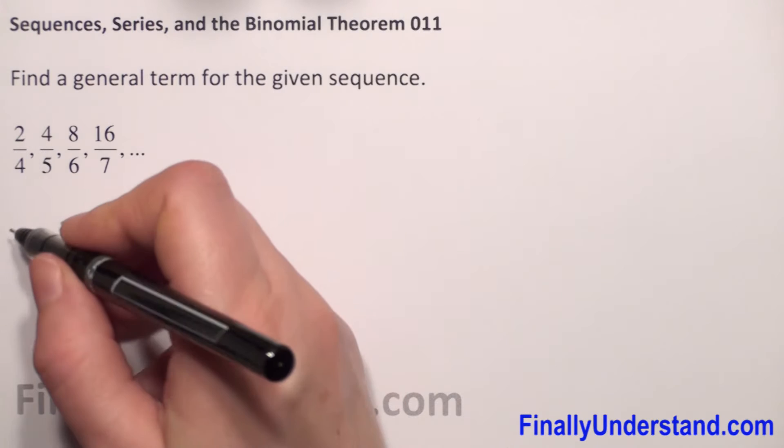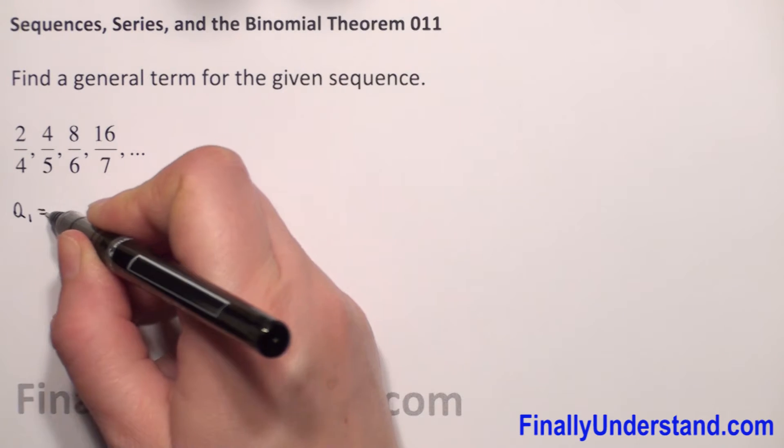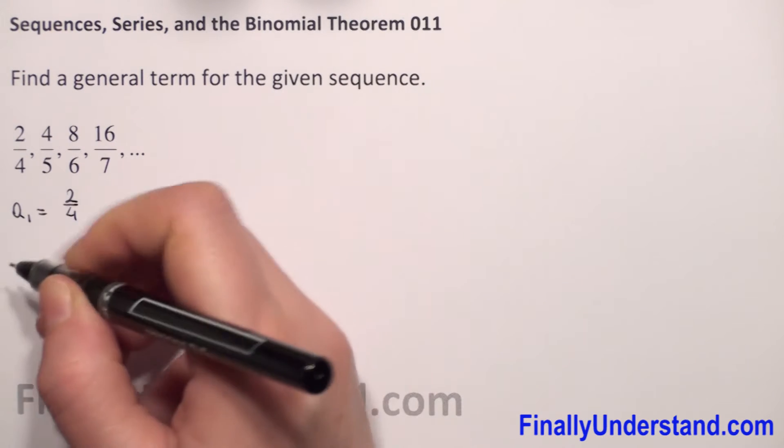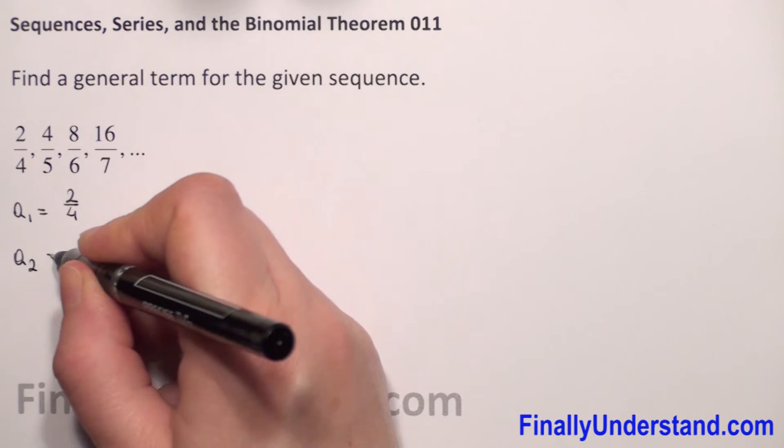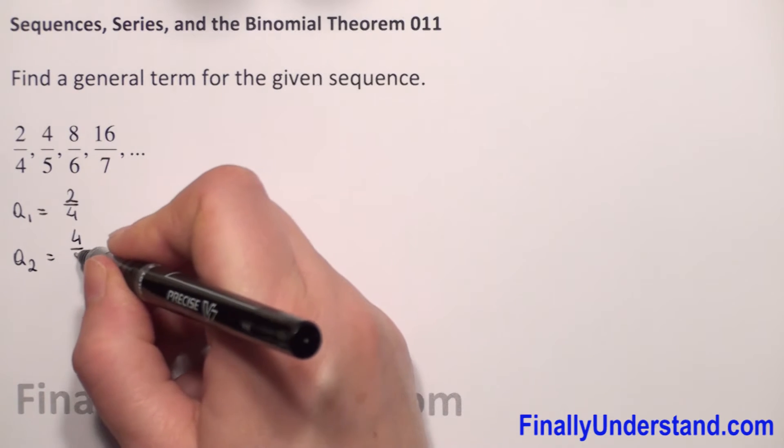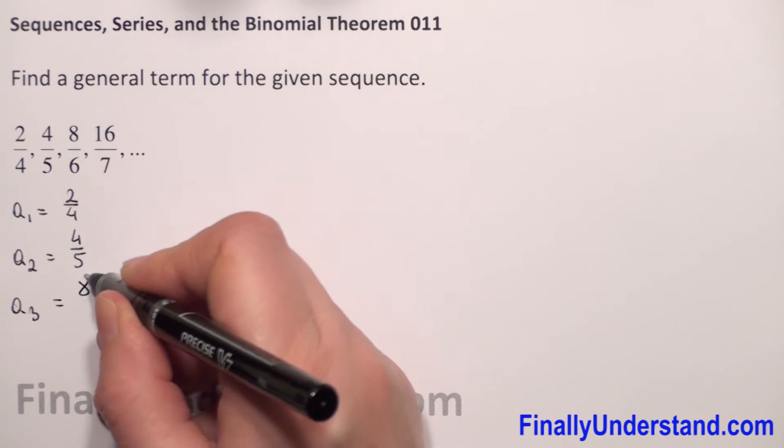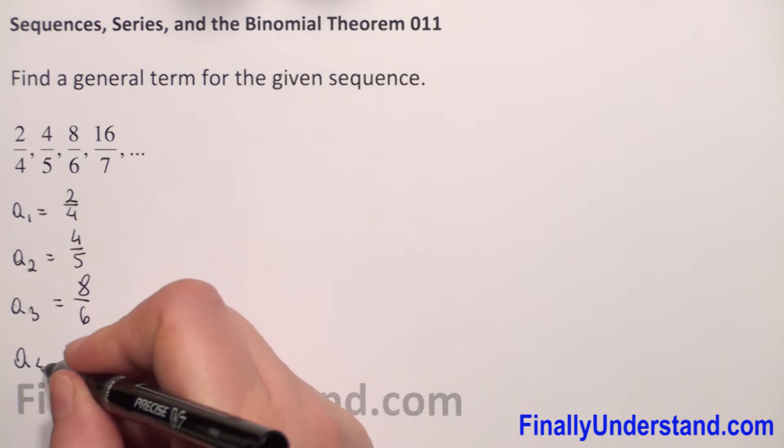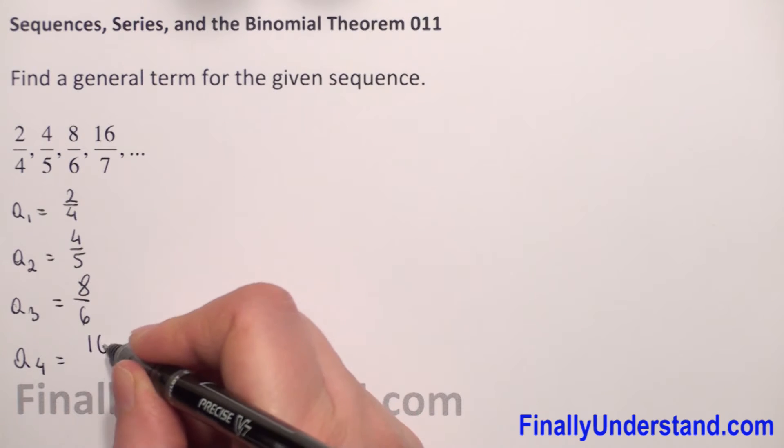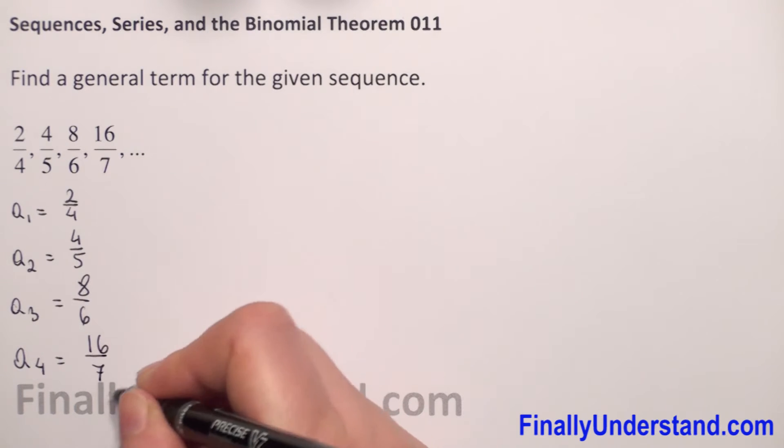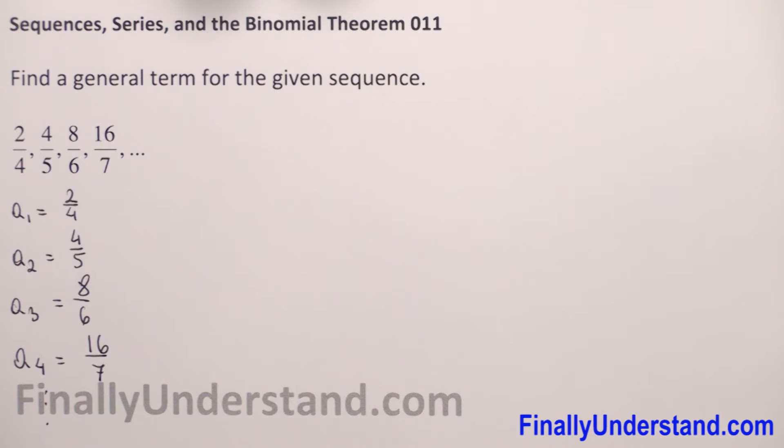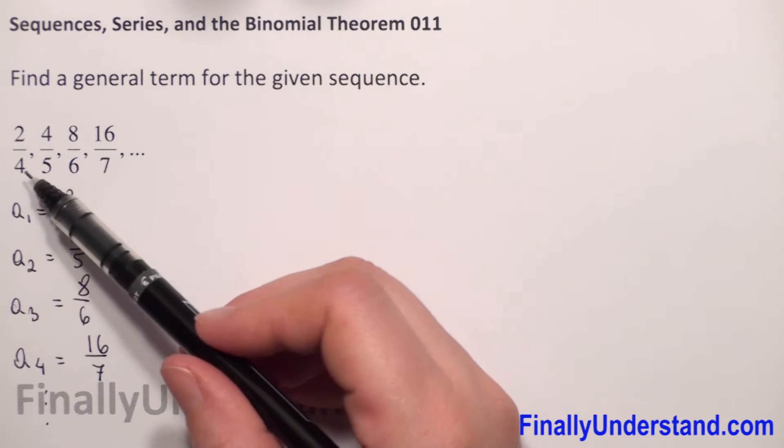We have to find the general term for the given sequence. The first term a1 is 2 over 4, the second term is 4 over 5, the third term is 8 over 6, and the fourth term is 16 over 7, and so on. What we have here are fractions.